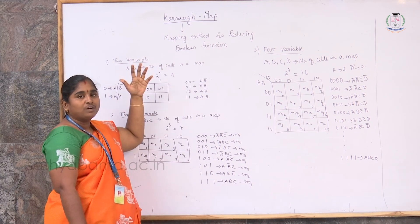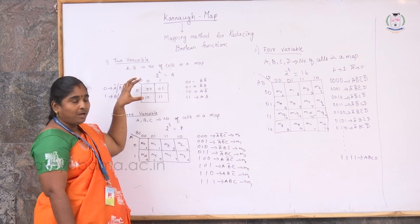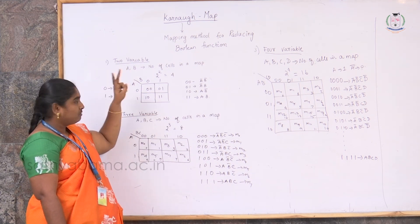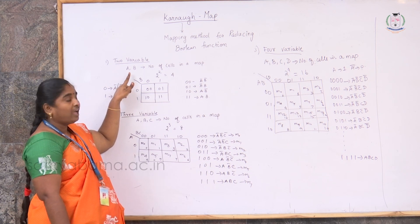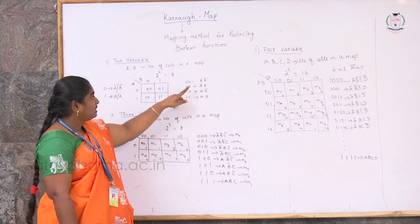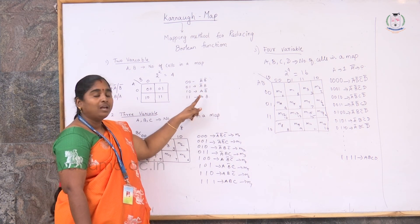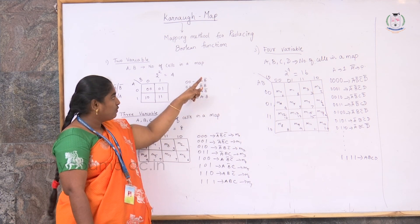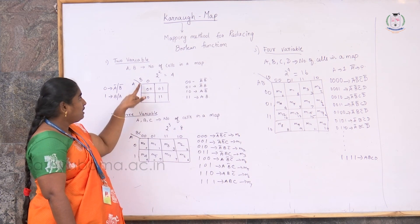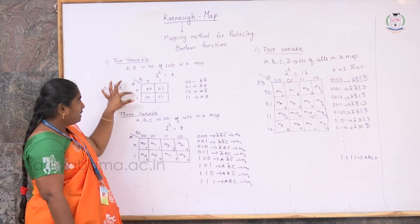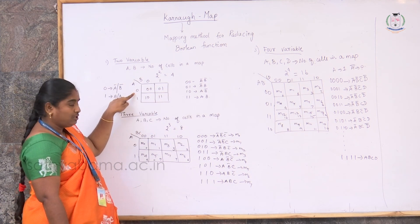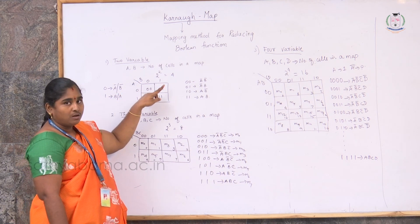Let's see how a Boolean function can be introduced into a map. If your expression is a 2-variable expression, there are only 2 variables A and B. When there are only 2 variables, there are only 4 possible combinations: A bar B bar, A bar B, A B bar, and A B. A map will contain only 4 cells, with a vertical line carrying A and a horizontal line carrying B, where A can be either 0 or 1 and B can be 0 or 1.